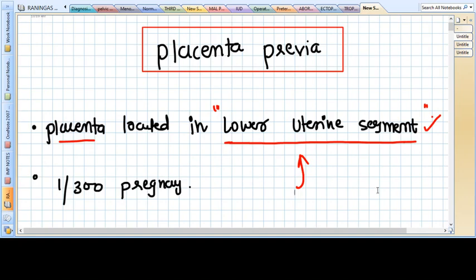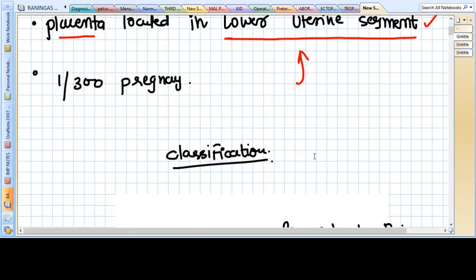What is the incidence? It is common, one in every 300 pregnancies. For example, if you are treating 600 patients per month, you will get two placenta previa patients by yourself. So incidence will be 0.33 percent.